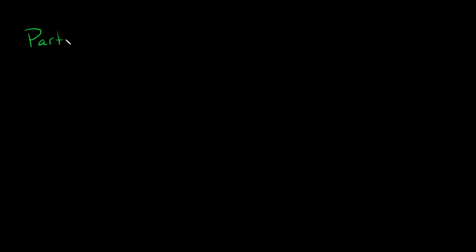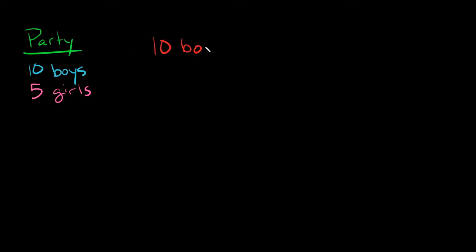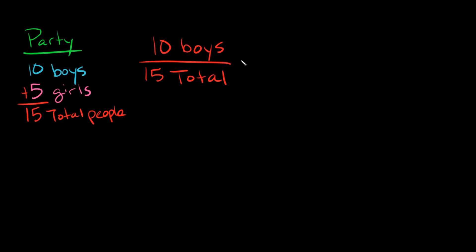Here's one more application. Let's say we're at a party with 10 boys and five girls. What fraction of the people at the party are boys? We have 10 boys and 10 plus 5 equals 15 total people. So 10 boys out of 15 total people — that's 10 over 15.